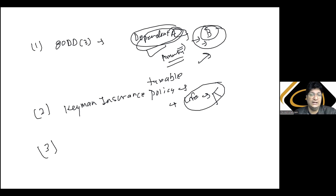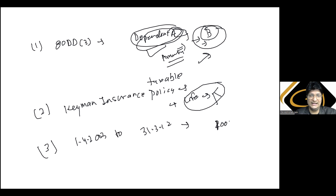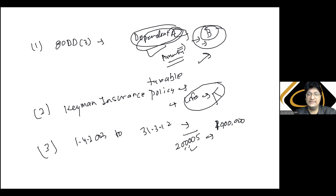Ab aur ek important provision — period 1st April 2003 to 31st March 2012 ke dauran agar aapne premium pay kiya hai, aur kisi bhi year mein sum assured ka 20% se zyada exceed ho gaya. For example, 10 lakhs ka sum assured hai to in case of miss happening 10 lakhs milenge. Agar premium 10 lakhs ka 20% — yaani 2 lakhs — se bhi thoda zyada ho jaata hai, to jo bhi maturity se paisa milega wo pura taxable hoga.